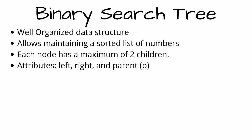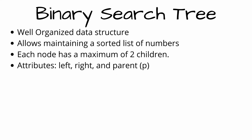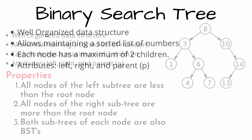In a binary search tree, each node contains attributes like left, right, and parent, which point to the nodes corresponding to its left child, right child, and its parent respectively. The keys in the binary search tree are always stored in such a way as to satisfy the binary search tree property.